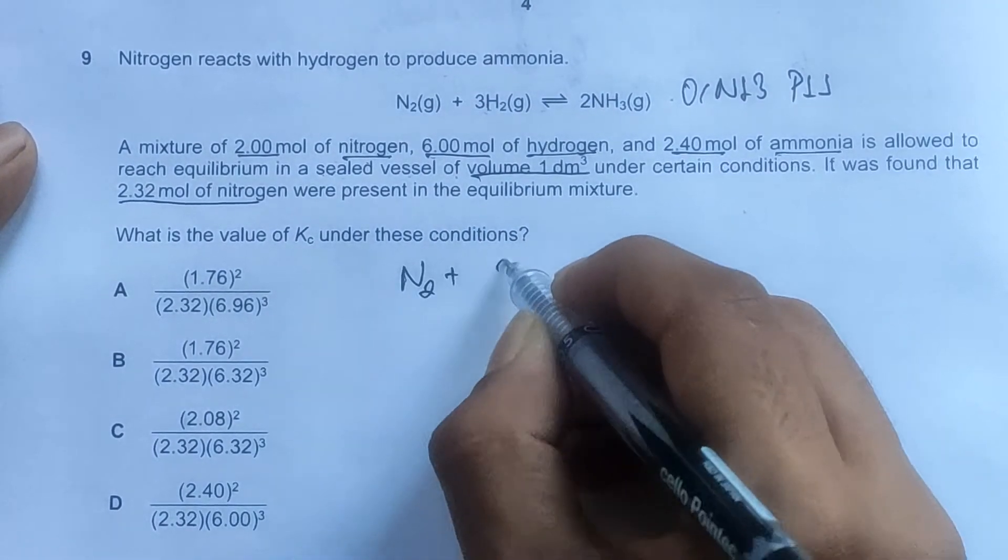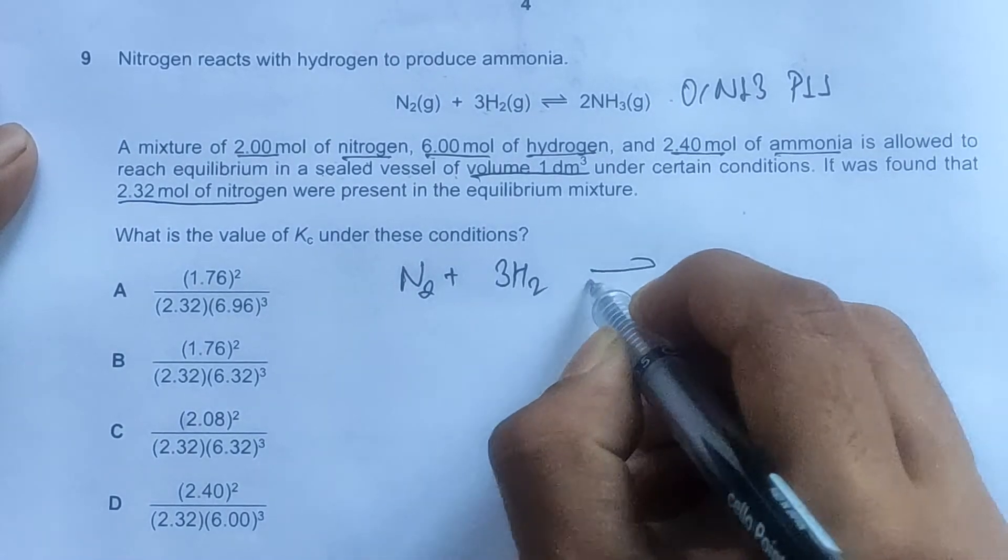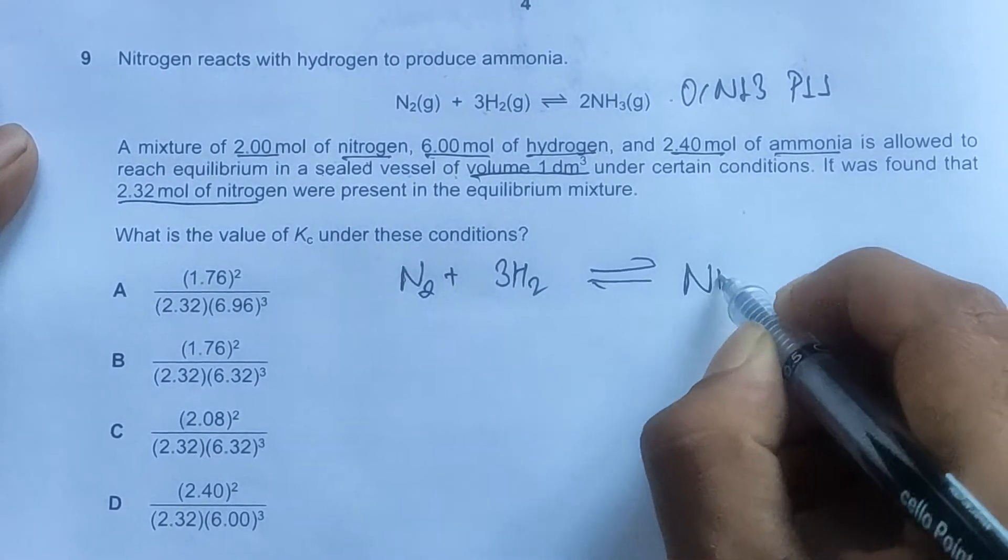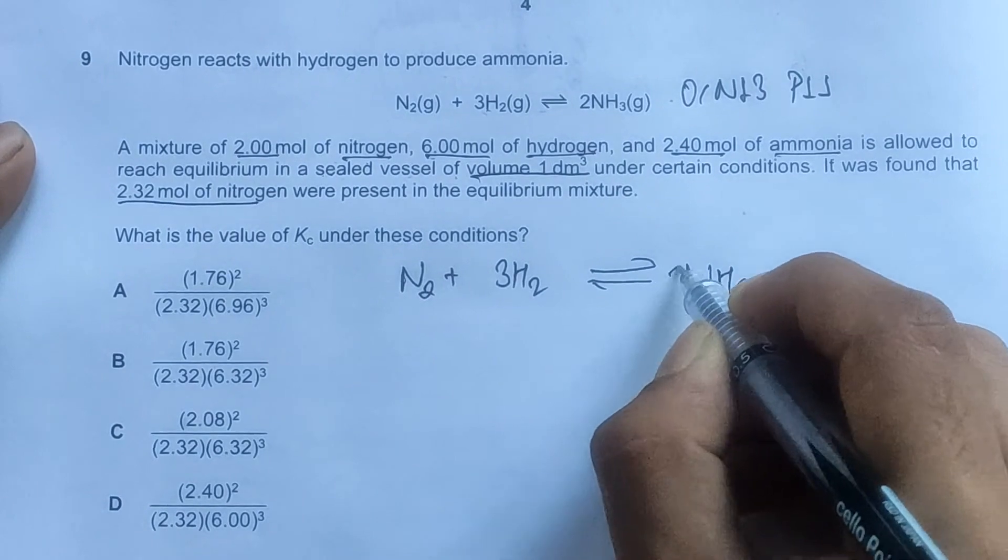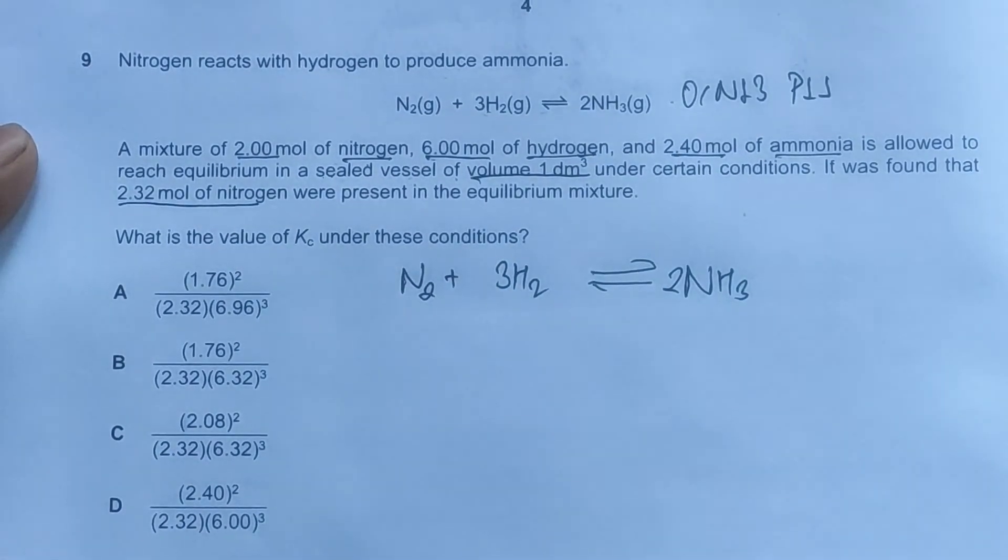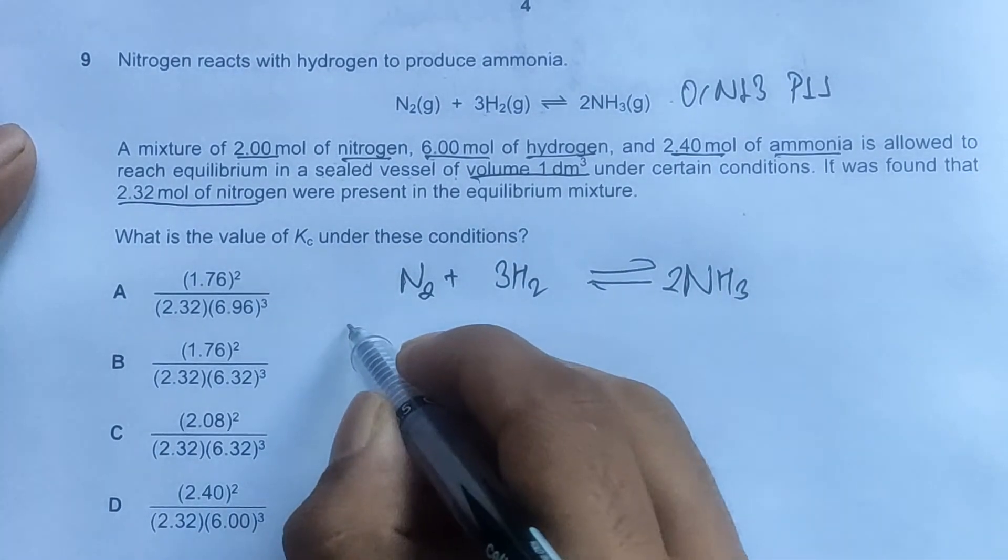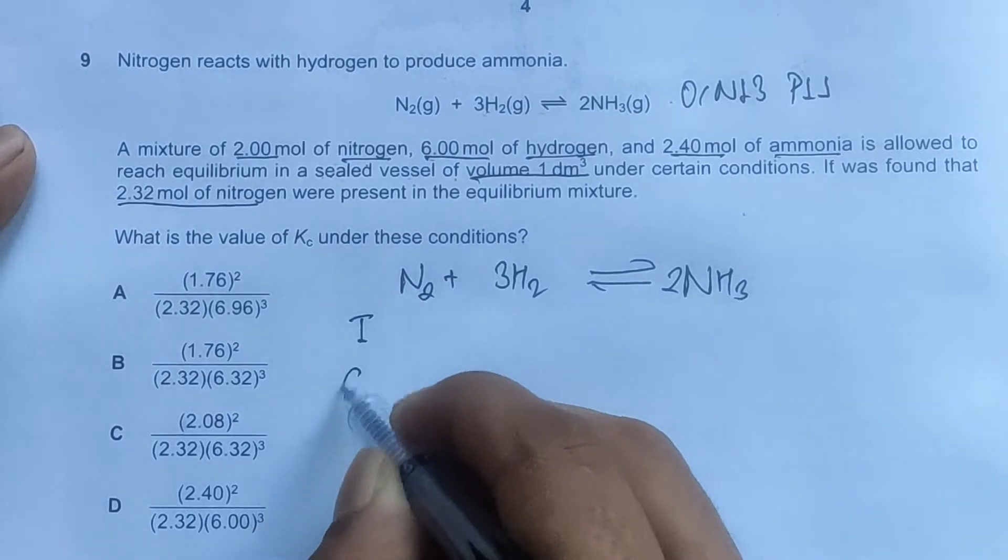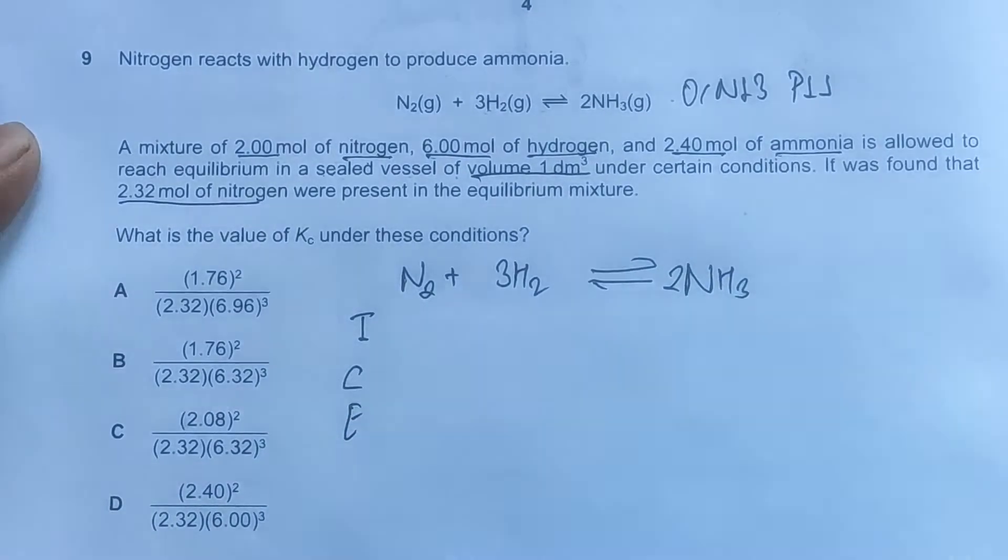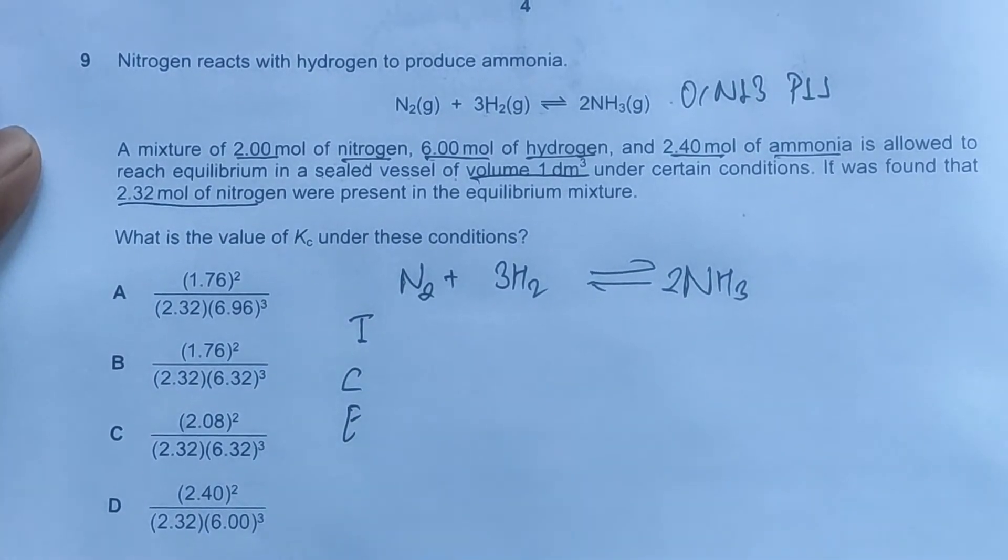It was found that 2.32 moles of nitrogen were present in the equilibrium mixture. First we'll copy this equation: nitrogen plus hydrogen in equilibrium gives ammonia NH₃. All these are in gas, so we'll just ignore them for now. We will construct an ICE table where I stands for initial conditions, C stands for change, and E stands for equilibrium.